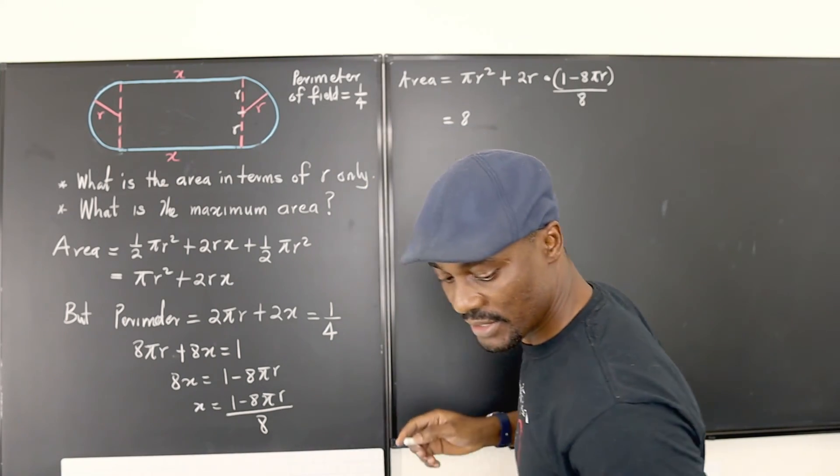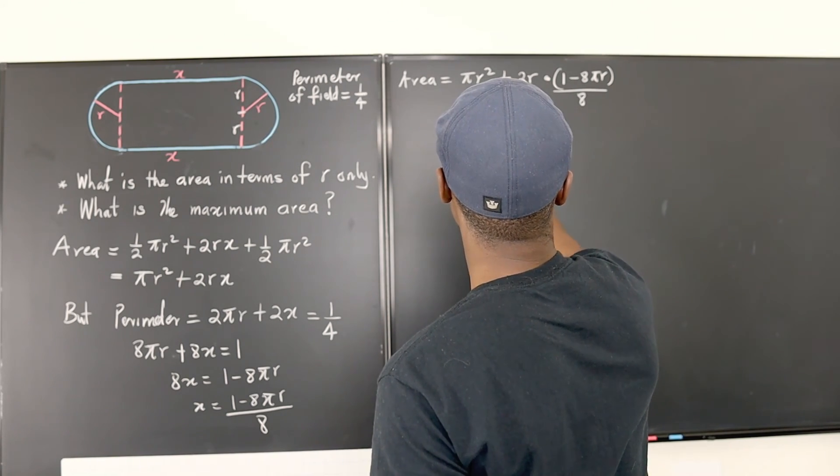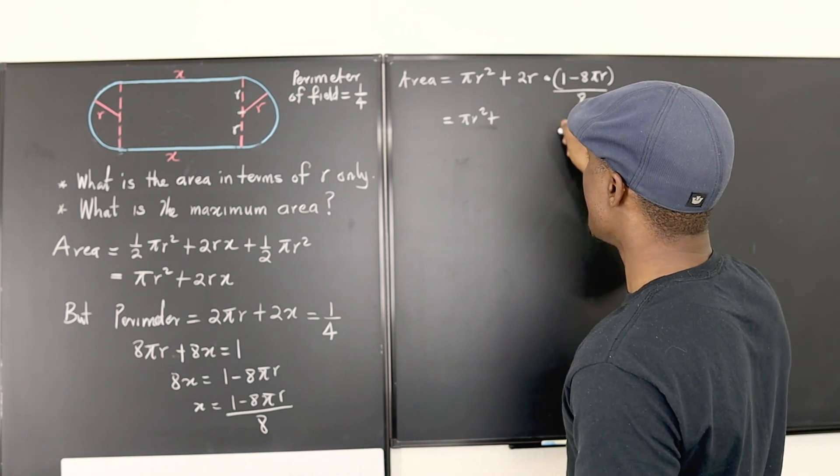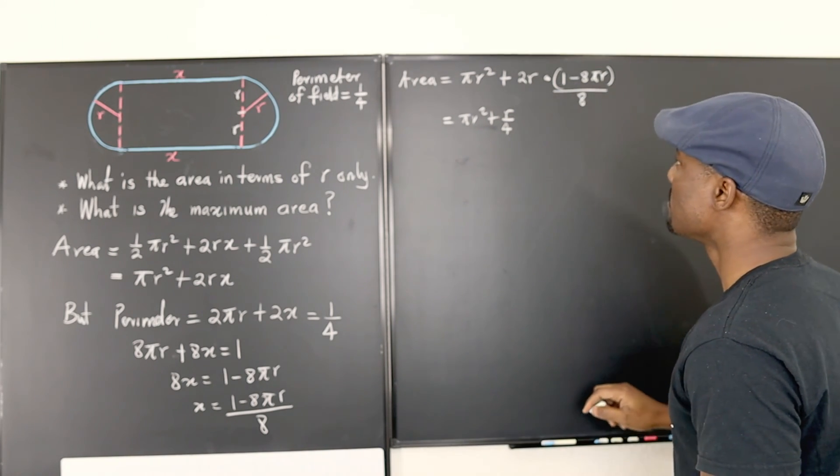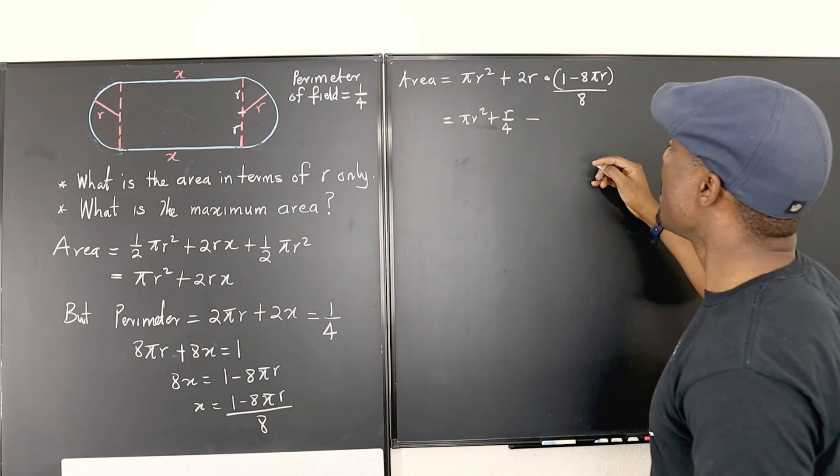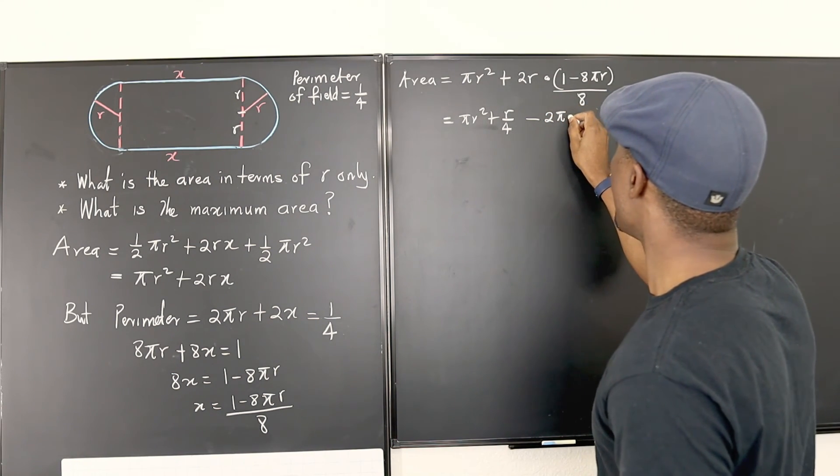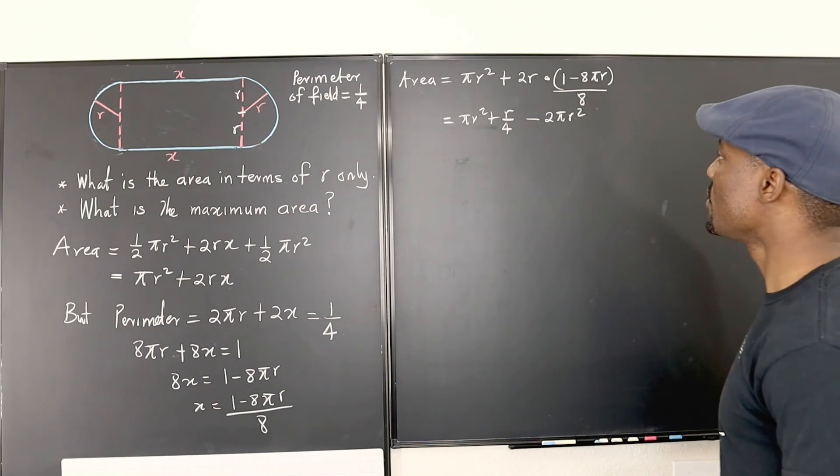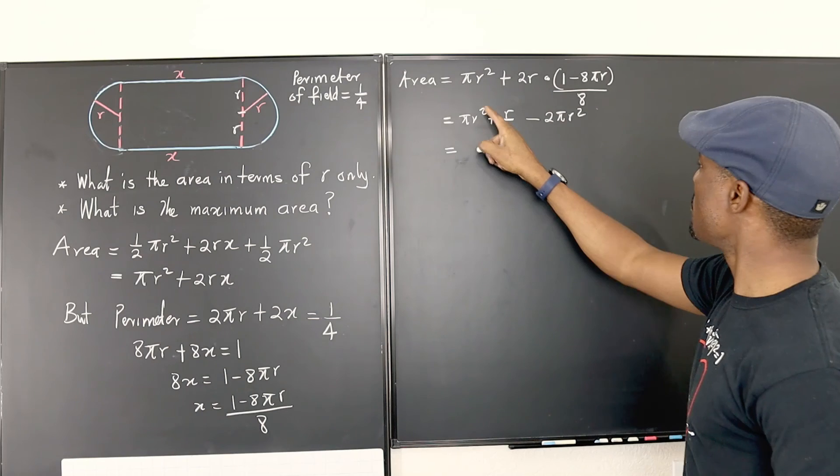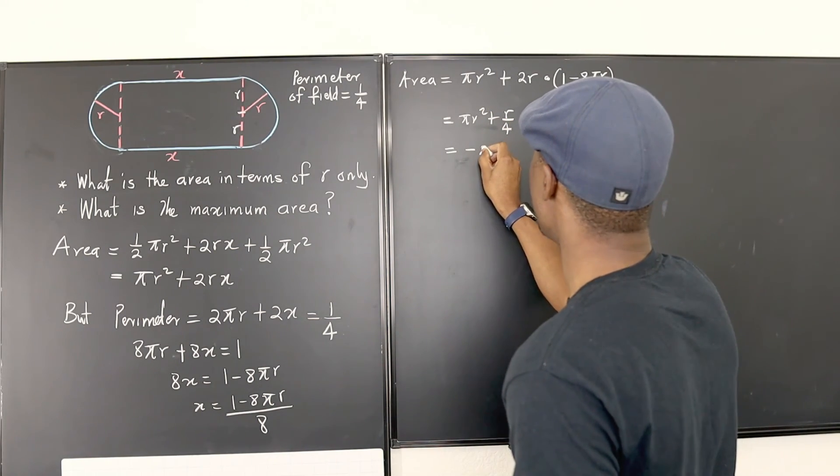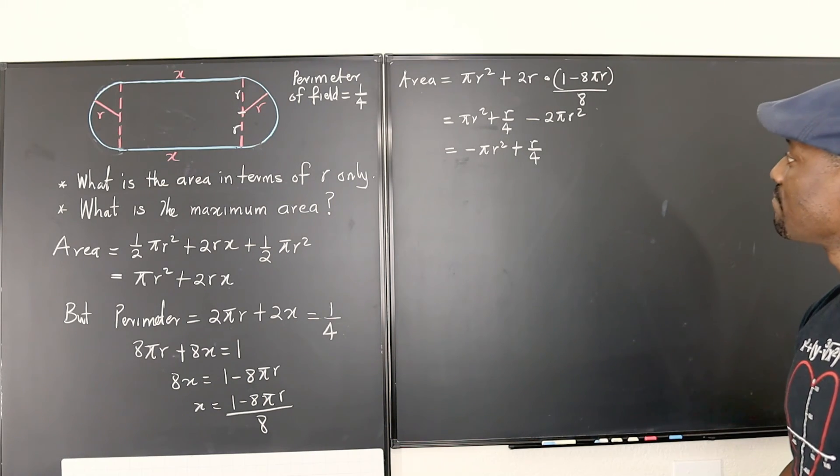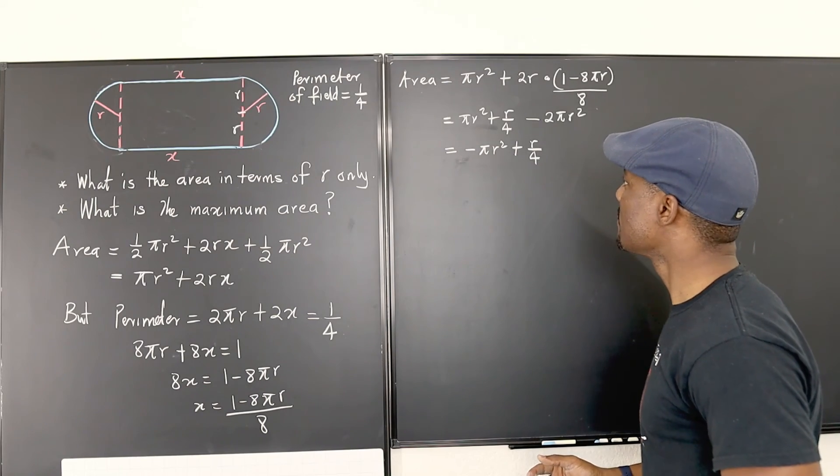So this is going to be pi r squared. So this is pi r squared plus. Now, if you multiply 2r by 1 and you divide it by 8, you're going to get r over 4. I hope you see that. Minus, if you multiply 2r by 8 pi r, it's going to give you 16 pi r squared. If you divide it by 8, it's going to be 2 pi r squared. So let's add this to this and have this. You're going to end up with pi r squared minus 2 pi r squared is going to be negative pi r squared. Negative pi r squared plus r over 4. That's it. And that's your area.